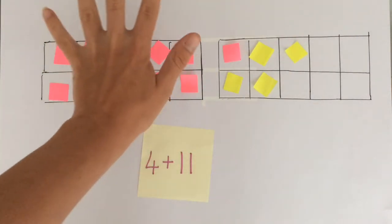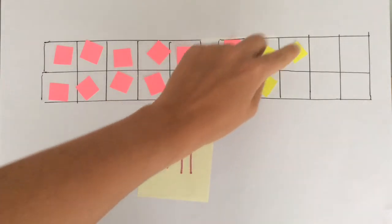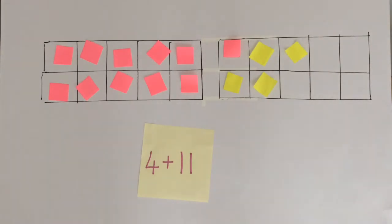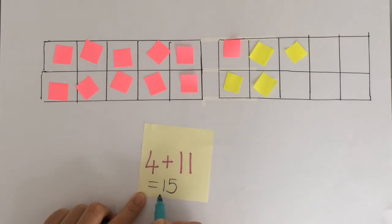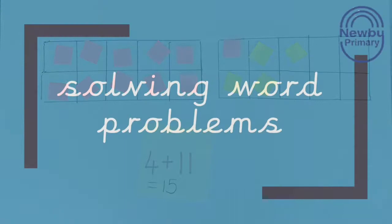So we've got 10, 11, 12, 13, 14, 15. So we now know that 4 add 11 is the same as 15. And it doesn't matter which way round we put the numbers. We always start with the largest amount in addition.